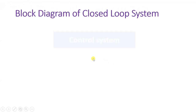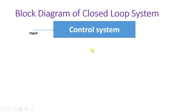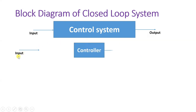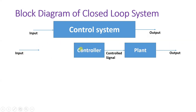Let us try to understand the closed-loop control system with its block diagram first. In the basic block diagram of a control system, we give input and take output. But in the detailed block diagram, we have an input that is given to a controller. The controller generates a controlled signal and here we have the output. As the name suggests, in a closed-loop control system, our agenda is to take output in feedback.